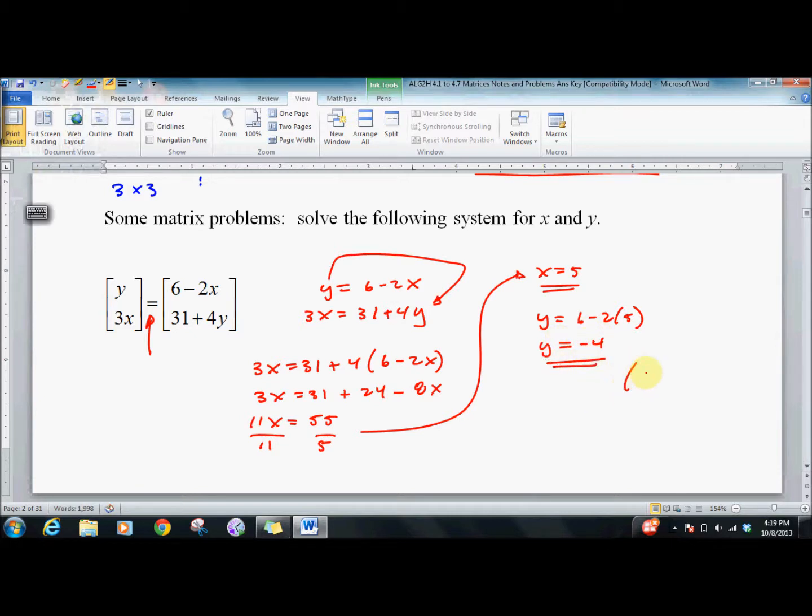So we get 5, negative 4. We check it out. 6... I already did this. Negative 4, check it out in this one. 4 times 5 is 20, 31 plus 20 does not work, so I have it in the wrong spot. 4 times negative 4 is negative 16, plus 31 is 15. 3 times 5 is 15. Correct?